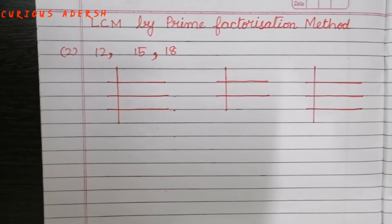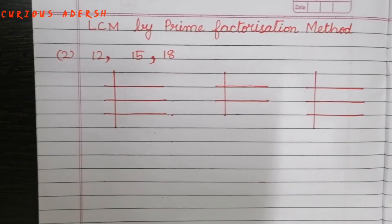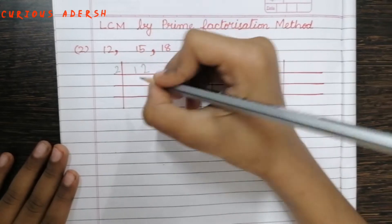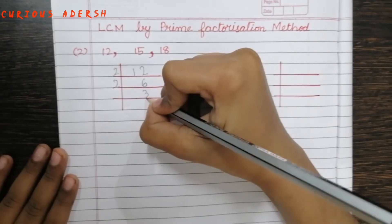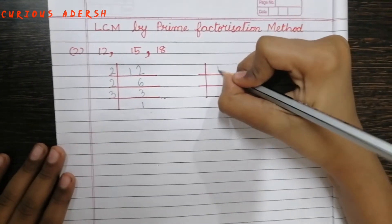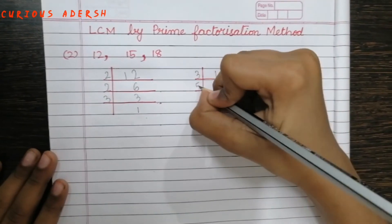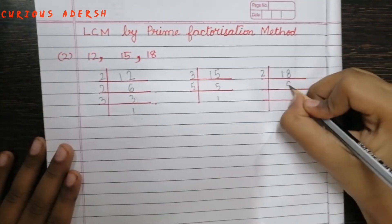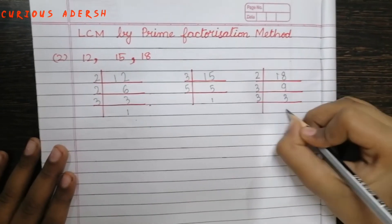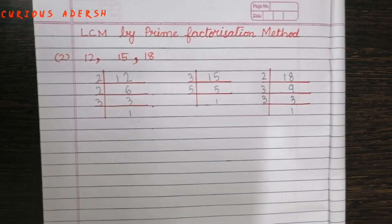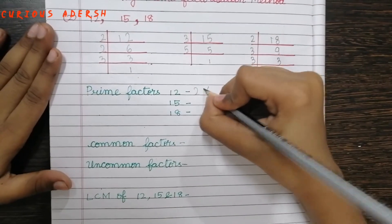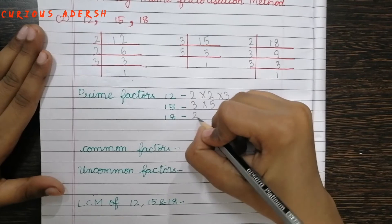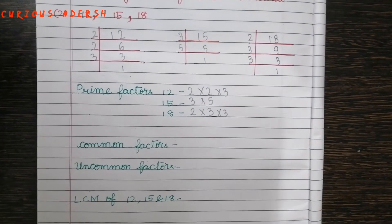Now let's learn LCM by prime factorization method for 12, 15, and 18. First we'll find their prime factors separately. Now let's write down the common factors.